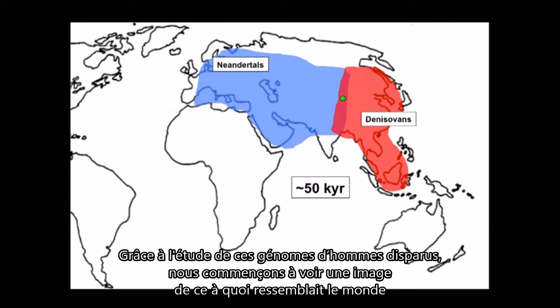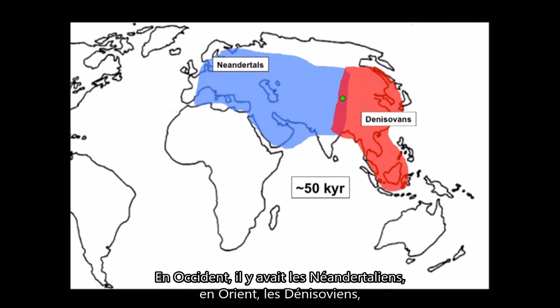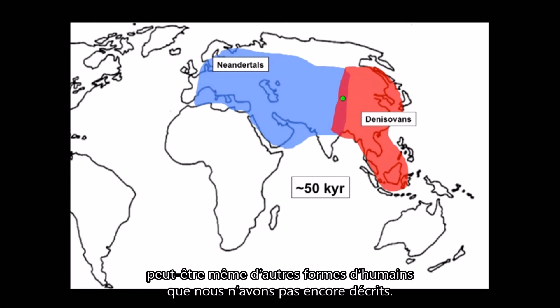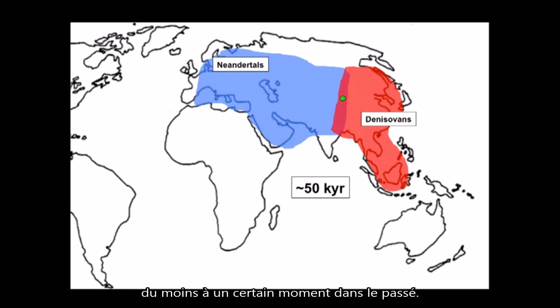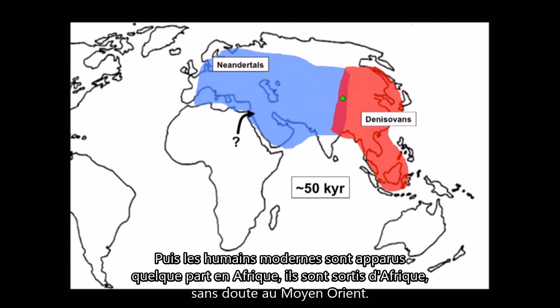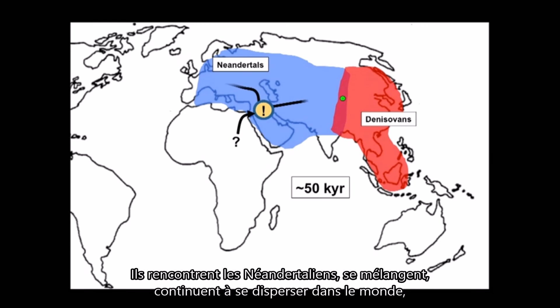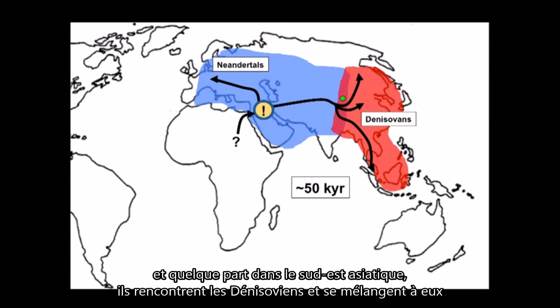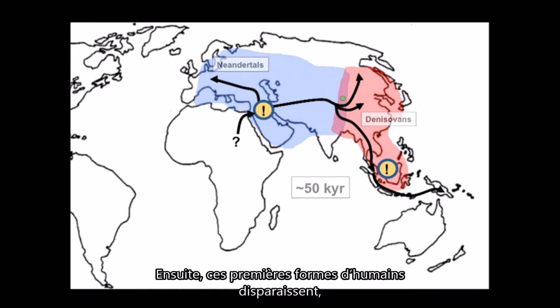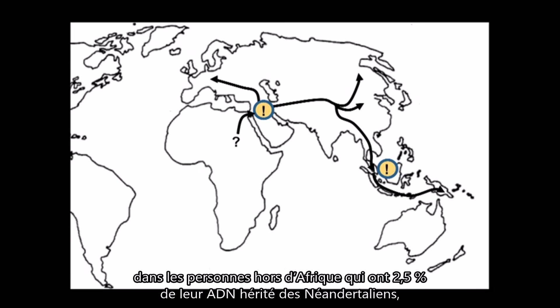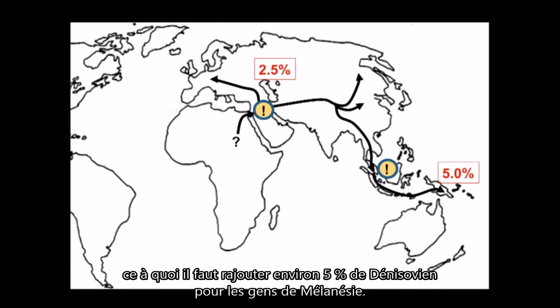From studying these genomes of extinct humans, we're beginning to arrive at a picture of what the world looked like when modern humans started coming out of Africa. In the west there were Neanderthals, in the east there were Denisovans, and maybe other forms of humans too. We know that in southern Siberia there were both Neanderthals and Denisovans at some times. Then modern humans emerged in Africa, came out of Africa, presumably met Neanderthals in the Middle East and mixed with them, continued to spread, and somewhere in Southeast Asia met Denisovans and mixed with them, continuing on into the Pacific. These earlier forms of humans disappeared, but they live on in some of us: people outside Africa have about 2.5% of their DNA from Neanderthals, and people in Melanesia have an additional 5% approximately from the Denisovans.